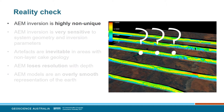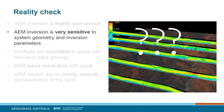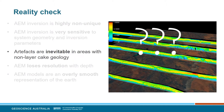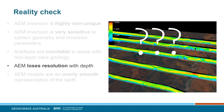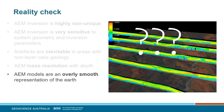But I'm here to give you a bit of a reality check. AEM inversion is highly non-unique — many models can fit the same data. It's quite sensitive to things like geometry of the system or inversion parameters. We get artefacts. AEM excels in 2D areas, but where you have 3D non-layer-cake geology you will get artefacts. AEM loses resolution with depth, and it's spatially variable depending on the conductivity of the overburden. And AEM models are overly smooth — smoothness is desirable for various reasons, but it's always smoother than the earth.